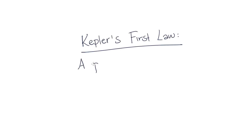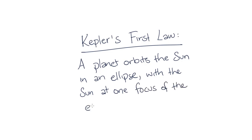Now, Kepler's first law states that a planet orbits the Sun in an ellipse with the Sun at one focus of the ellipse.